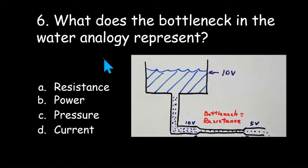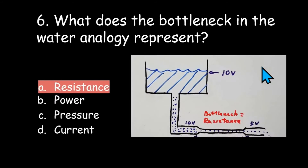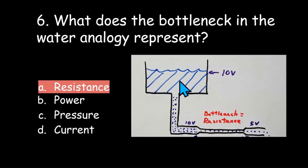Number six: what does the bottleneck in the water analogy represent? Resistance, power, pressure, or current? The answer is resistance. Whenever you have a bottleneck in a pipe it's going to slow the flow of water or current through that pipe, which is exactly what a resistor does in an electrical circuit — it slows or reduces the flow of current through the circuit.